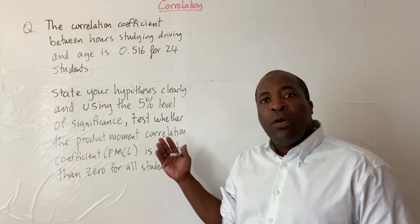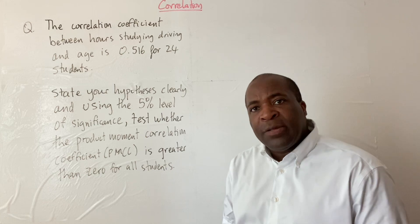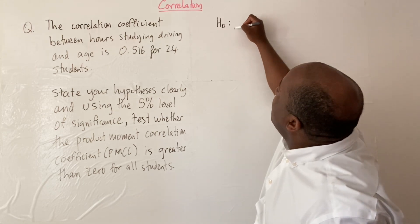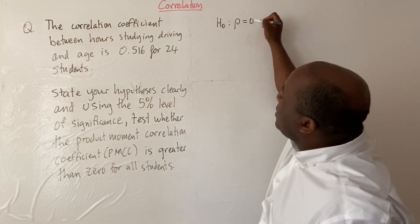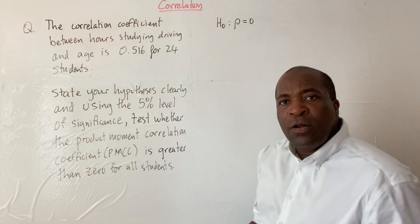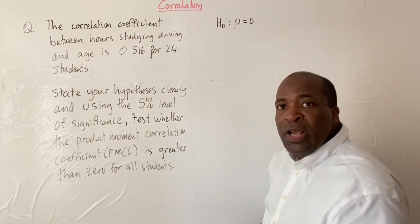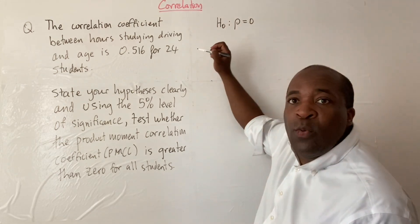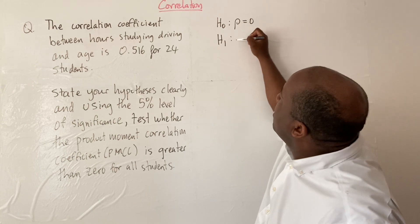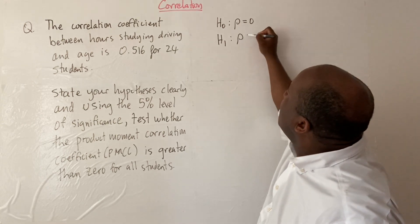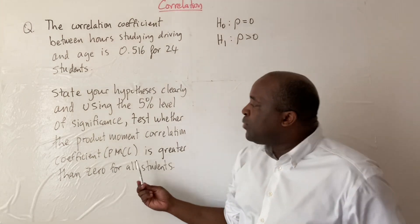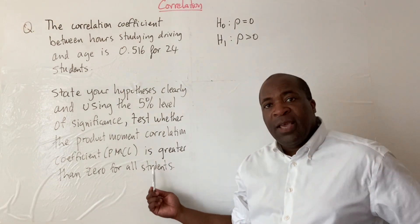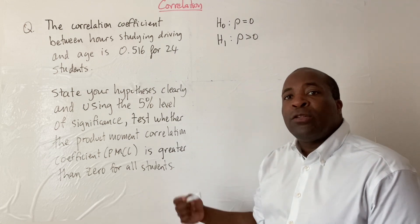Even if they don't tell you, whenever you're doing hypothesis testing, you want to state your hypotheses. So here, H0 will be rho equals 0 — that's the default hypothesis in all these questions, that there's no linear relationship between X and Y. Then H1, the alternative hypothesis, will be that rho is positive, which is what the question asks us — test whether the PMCC is greater than 0. The claim will generally be in the alternative hypothesis.